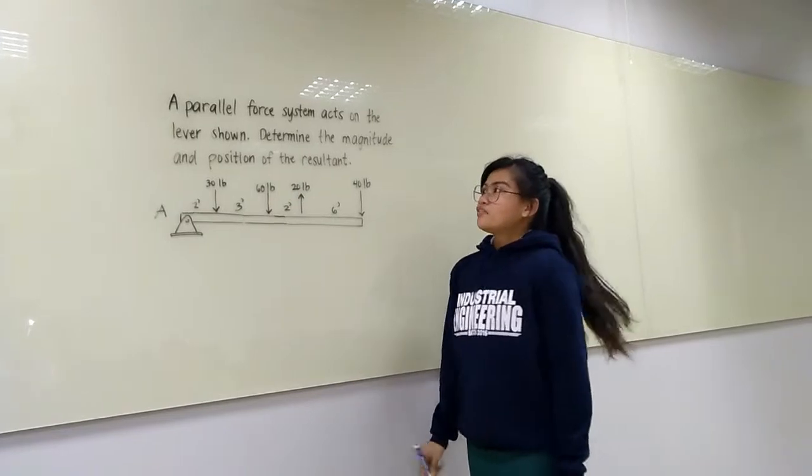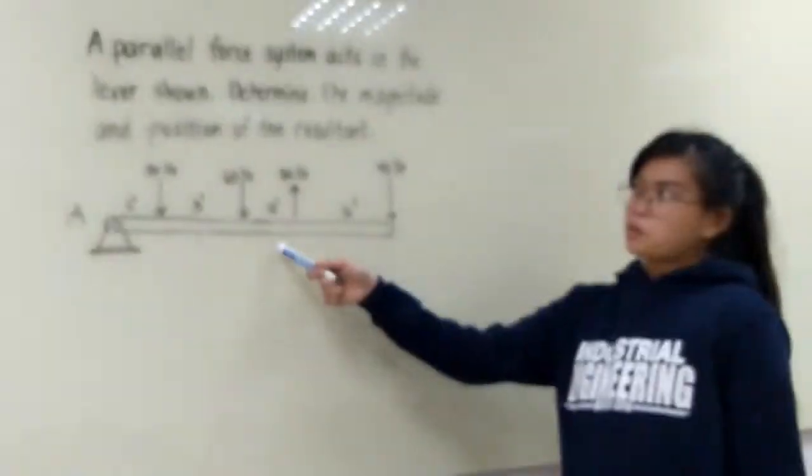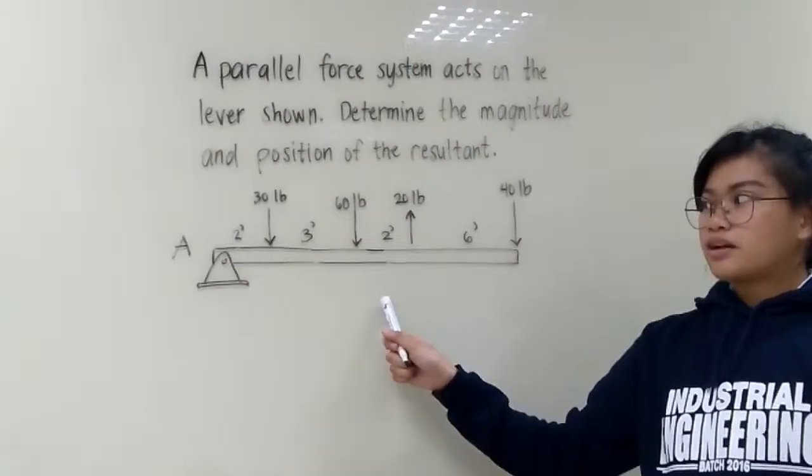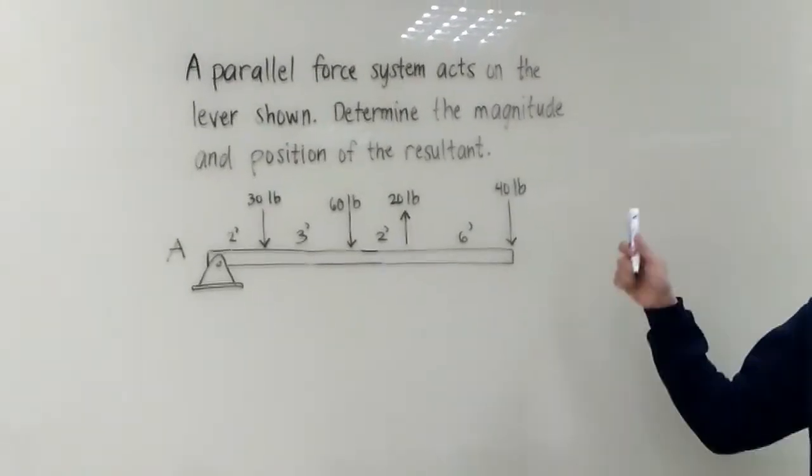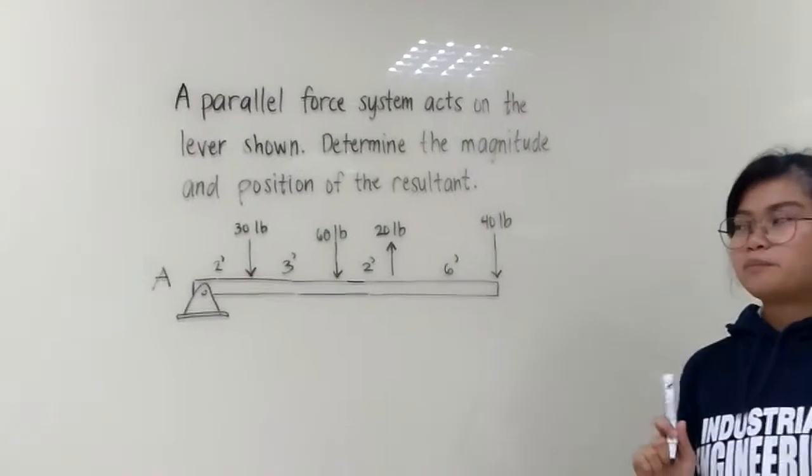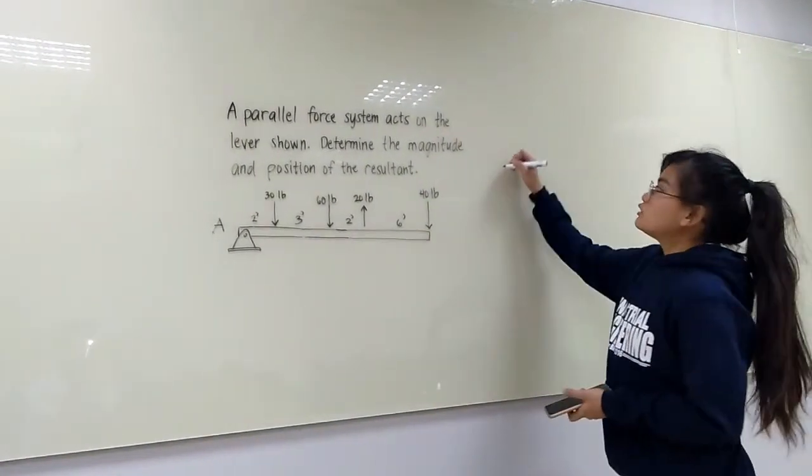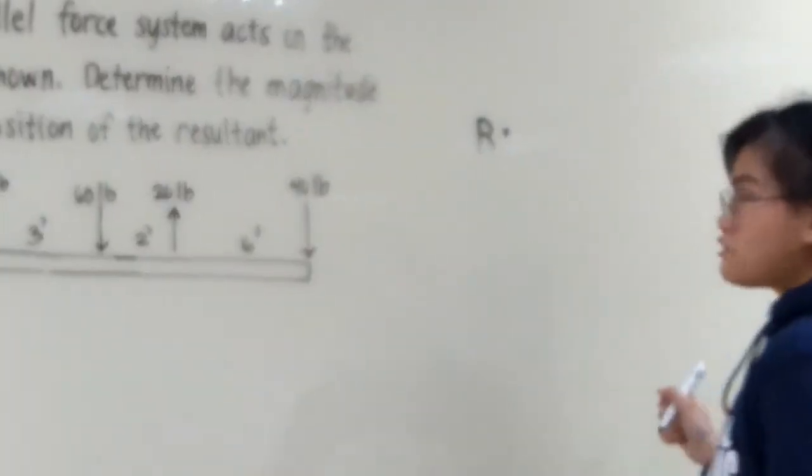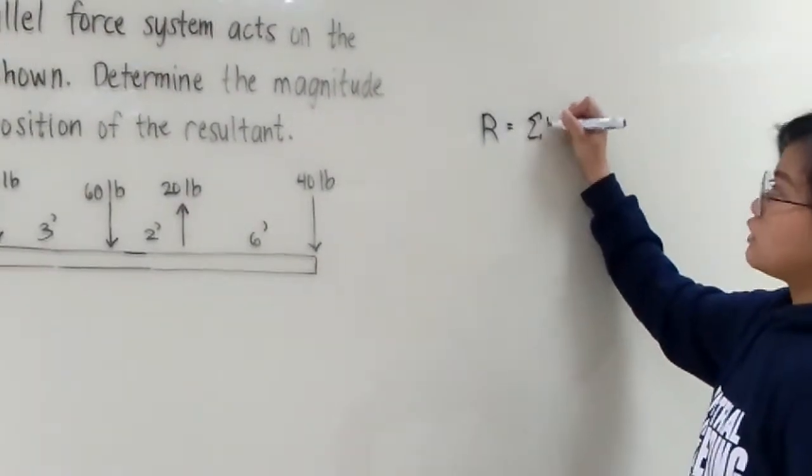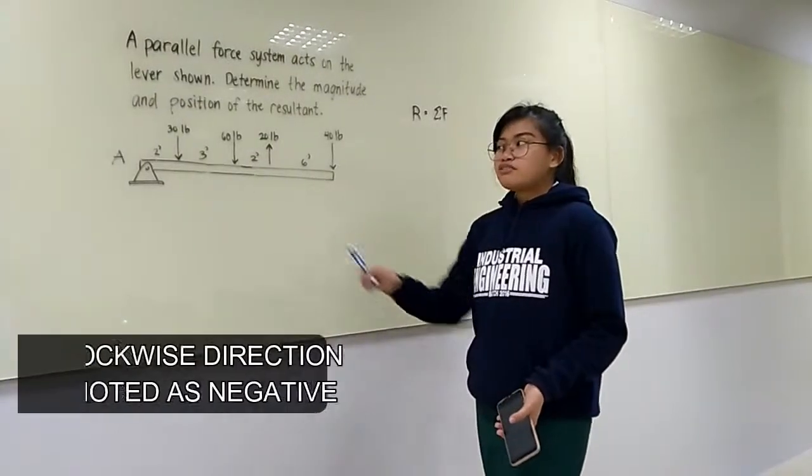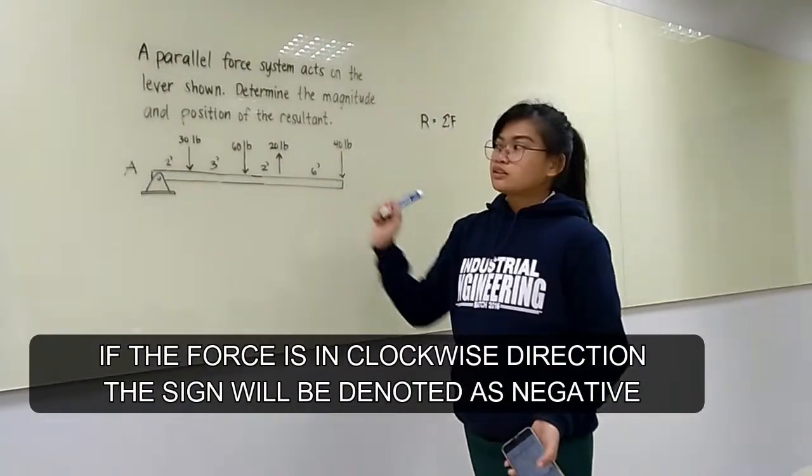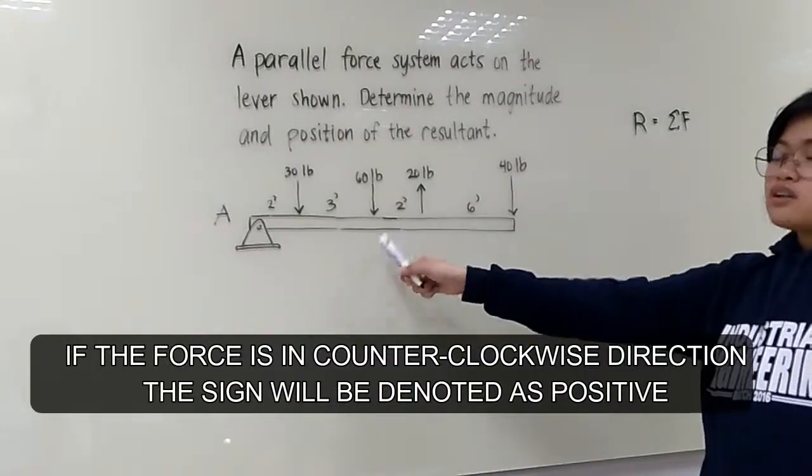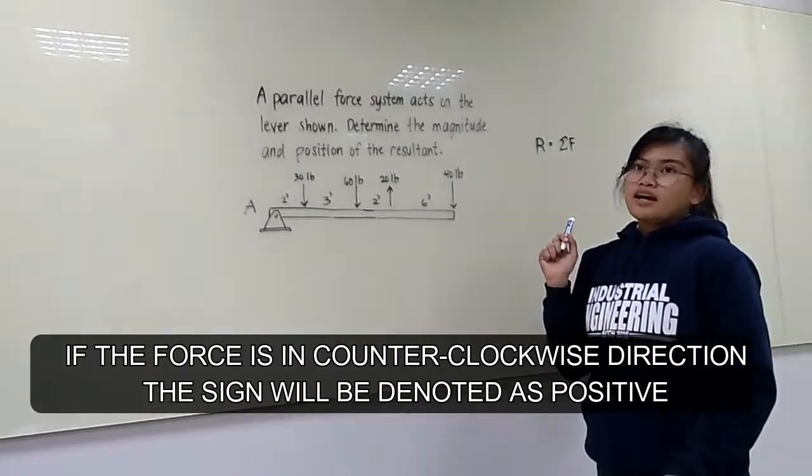For our sample problem, we have a parallel force system that acts on the lever shown. We need the magnitude and position of the resultant. So here we have four forces acting upon the lever, and we are going to get the resultant of the force with respect to point A. Now, the first step is that we are going to get the resultant force. To get the magnitude of the resultant force, we have to get the summation of all the forces acting on the lever. Take note that if the force is in clockwise direction towards point A, the sign will be negative. But if the force is in counterclockwise direction towards point A, it will be positive.